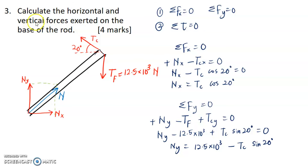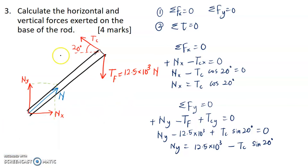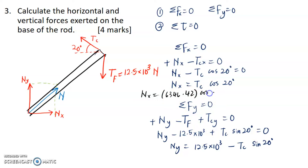Calculate the horizontal and vertical forces exerted on the base of the rod. We need to calculate NX as well as NY. Using the expression obtained earlier from the equilibrium of forces: to find the horizontal force at the base, NX equals TC cos 20 degrees, which equals 6346.42 times cos 20 degrees. The answer is 5,963.7 newton.